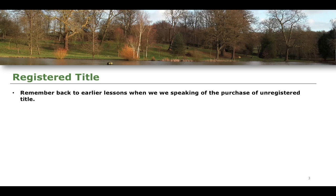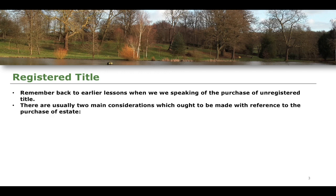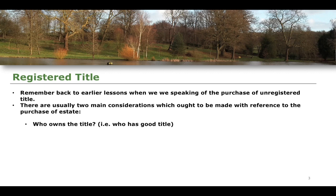If we remember back to earlier lessons, we were talking about unregistered conveyancing. There are generally two main considerations when we talk about the purchase of an estate. If I was the purchaser of some land, whether registered or unregistered, I'm going to ask two questions. The first question is: who has good title? Does the person I'm buying from actually have title to sell it to me — who owns the property?